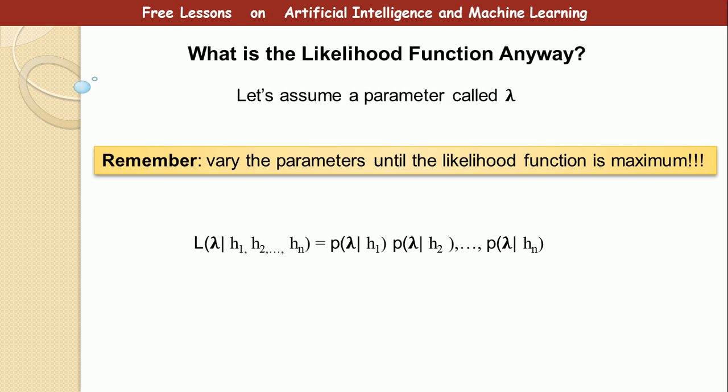So what is the likelihood function? Now let's assume a parameter called lambda. Remember, we need to vary the parameters to make this function to be maximum. Now, the likelihood function says that the probability of this parameter lambda given the measurements equals the probability of individual parameters. So just take note that this is the likelihood function and it needs to be minimal. Now, I'm not going to write out the equation exactly as it is, but take note that this is a likelihood function. Likelihood is related to probability.